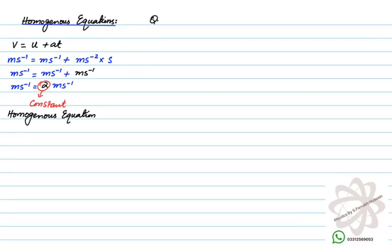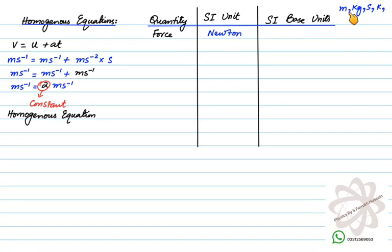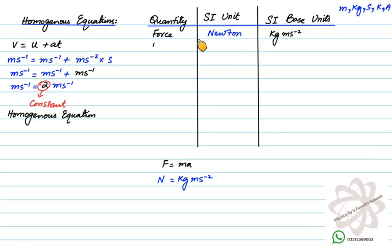Moving on to the next topic, you have to make three columns: one for the quantity, one for SI units, and one for SI base units. In the third column you cannot write any unit other than SI base units — meter, kilogram, second, Kelvin, and ampere — the five SI base units in your syllabus.